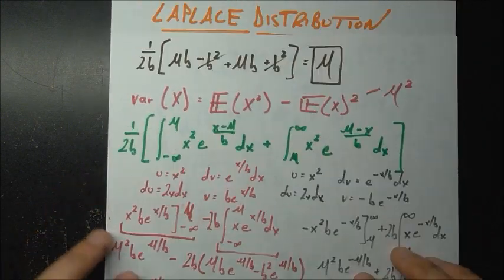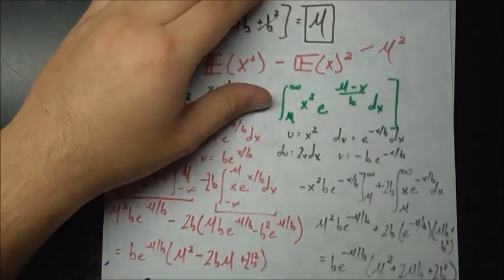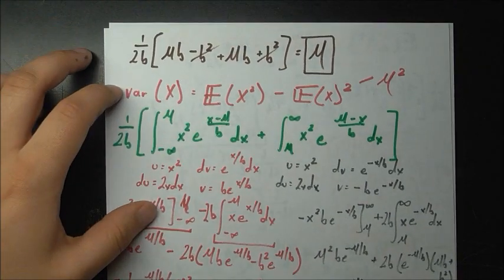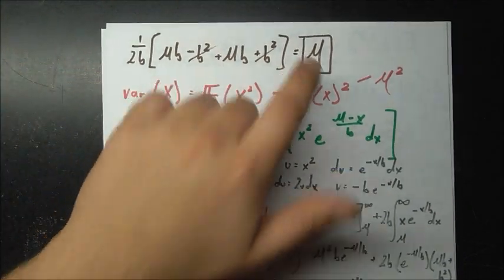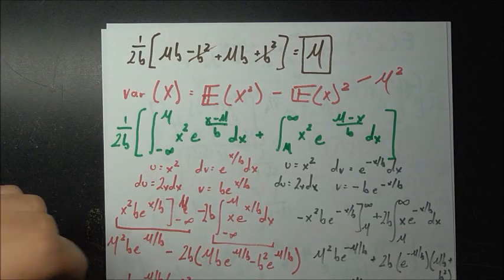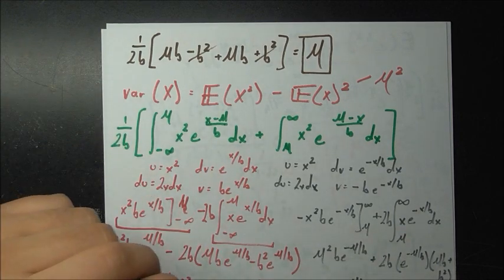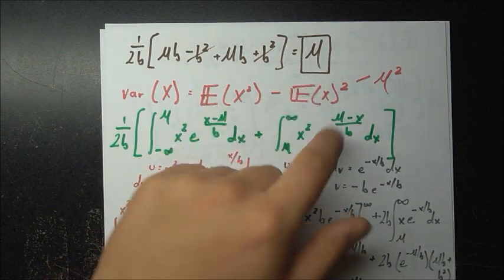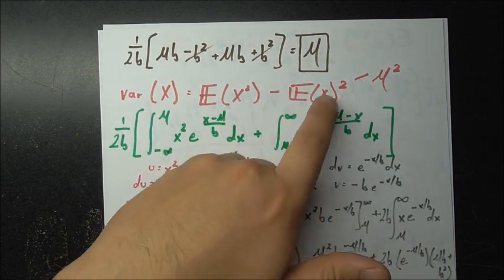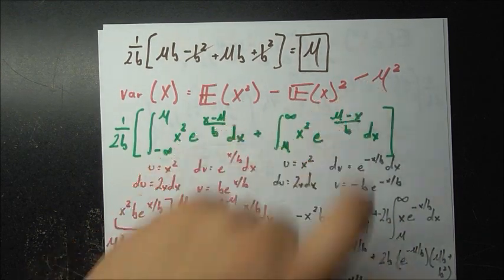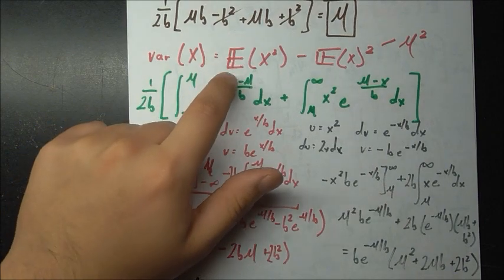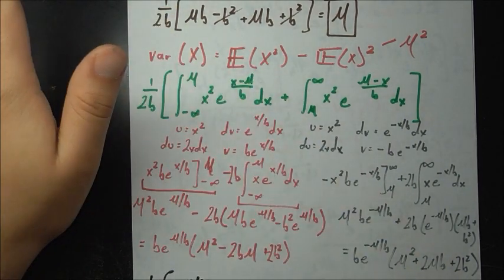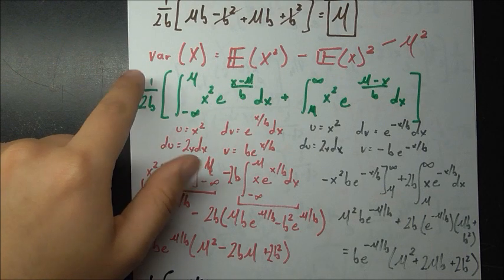So the expected value cleanly simplifies to just mu. The name mu obviously often stands for mean, so we suspected this from the beginning, and indeed it is correct. Now we find the variance using the formula E[X squared] minus (E[X]) squared. Since E[X] equals mu, we subtract mu squared. The task is to find E[X squared], which we compute the same exact way.